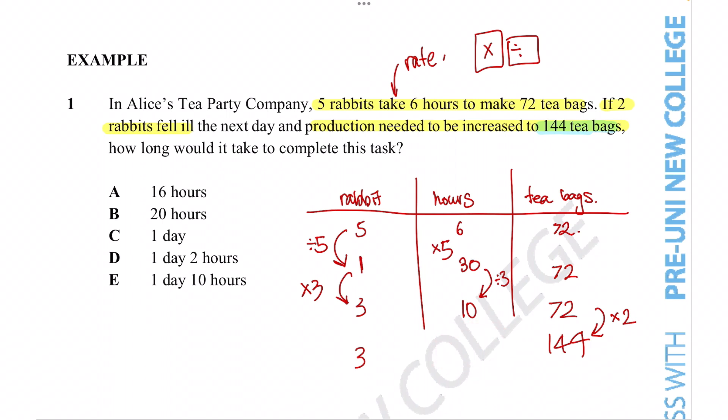Think about this. The number of rabbits has not changed. So there's no more help than before in this case scenario. But the number of tea bags that you make has doubled. So does it make sense for the hours to increase or decrease for the rabbits? Of course, the time is going to increase. So this time we multiply by two to get 20 hours needed for these three rabbits to make 144 tea bags. So the correct answer is going to be option B.